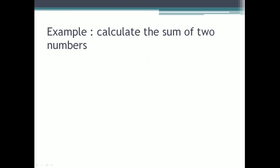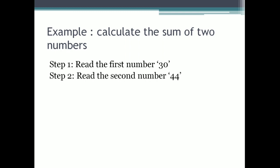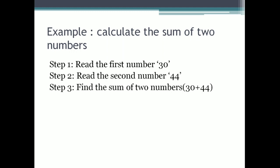Now let's check one more example: how to calculate the sum of 2 numbers. Step number 1, read the first number 30. Step number 2, read the second number 44. Now we have got the 2 inputs, 30 and 44. Step number 3, find out the sum of the 2 numbers by adding 30 and 44. Step number 4, print the result 74. So that is the second term called print or write.